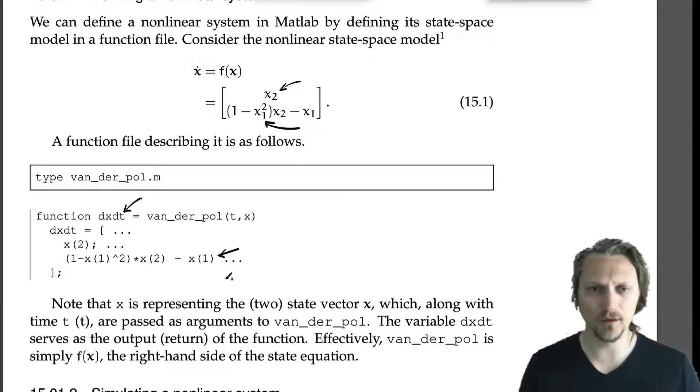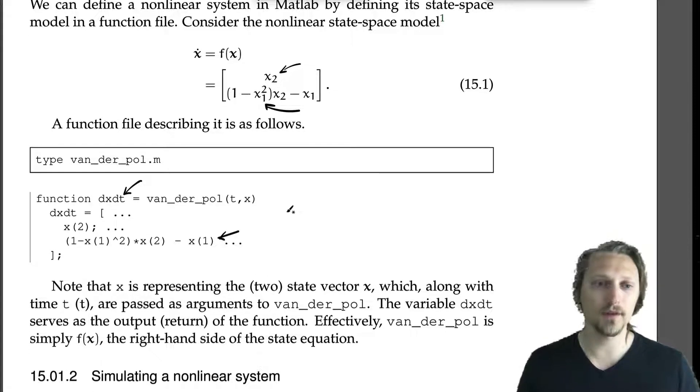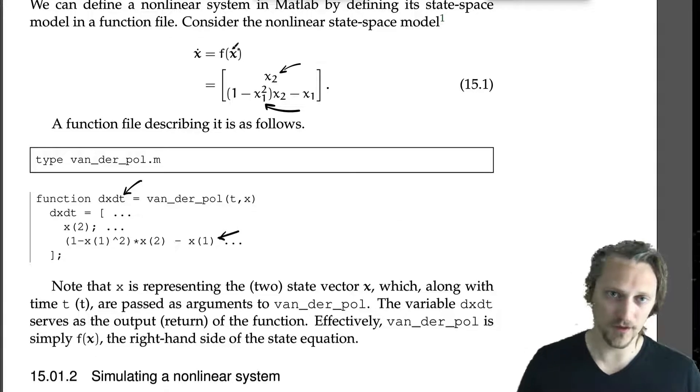It's just the right-hand side of the state equation. Note that x is representing the two-state vector x̄, which along with time are passed as arguments to van_der_pol. The variable dxdt serves as the output or return of the function. Effectively, van_der_pol is simply f(x), so it's just the right-hand side of the state equation.